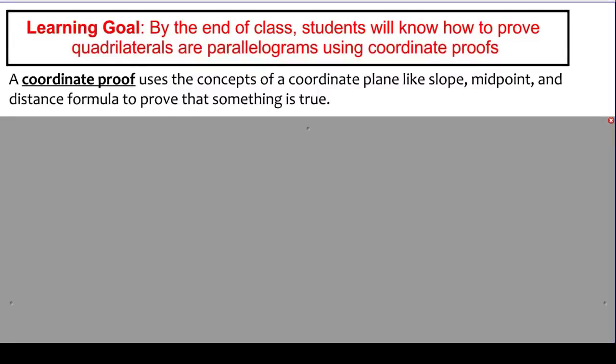Continuing our discussion of parallelograms and their properties, we're going to do what are called coordinate proofs. We've done a little bit of this before, but we're going to expand the idea and really use what we know about the coordinate plane in order to prove that different quadrilaterals are parallelograms.